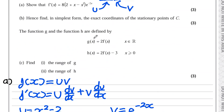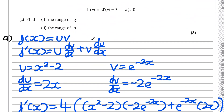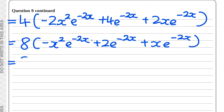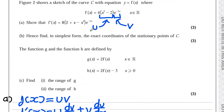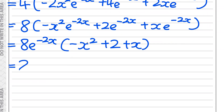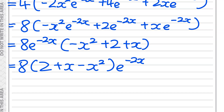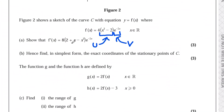Looking at the final answer, we want 8 factorised out of the front. We currently have a 4, so if we factorise 2 out of the bracket, the 4 becomes 8. Factorising 2 out gives minus x squared e to the power of minus 2x, plus 2 e to the power of minus 2x, plus x e to the power of minus 2x. Then factorising out e to the power of minus 2x as well gives 8 e to the power of minus 2x times (minus x squared plus 2 plus x). They've written it in a slightly different order — 8(2 + x − x²)e to the power of minus 2x — but this is the final answer.